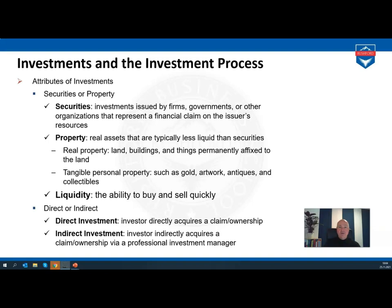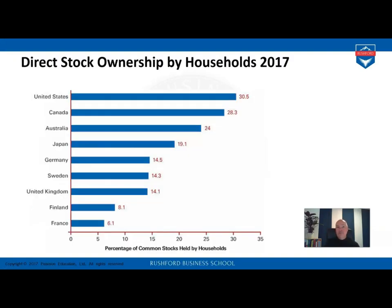Looking at the distribution of direct stock investments by households in 2017, the United States leads these statistics because Americans are used to investing their money frequently in the stock market. They are followed by Canadians and Australians. Comparing to Germany and European countries, only about half of European households invest in direct stocks compared to the United States — historically due to the different mentality between Anglo-Saxon and European investors.